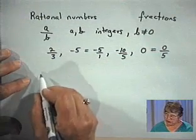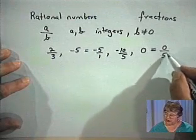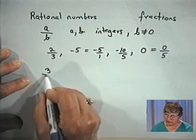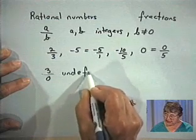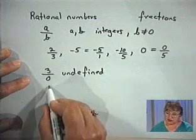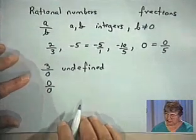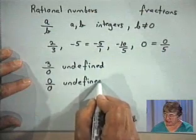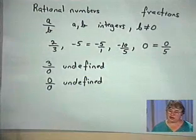Just to remind you about 0: it's okay when it's in the numerator of a rational number, but if it's in the denominator — for example, 3 over 0 — this is not a rational number. In fact, it's an undefined number; we cannot find a value for it. Similarly, 0 over 0 is also undefined. Any time you have 0 in the denominator, you have an undefined expression, and that's going to be important when we work with rational expressions.